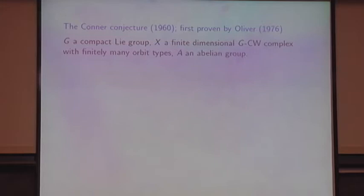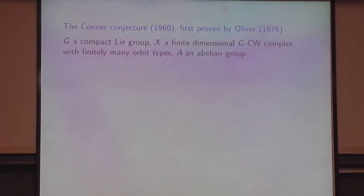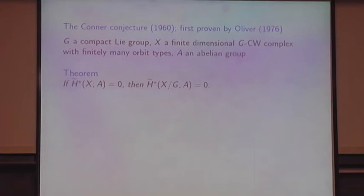Now I want to talk about the Conner conjecture, which is an analogous result where you have a compact Lie group rather than a finite group. Finite dimensional GCW complex again, and now you assume that it has finitely many orbit types. Let A be an abelian group. Theorem: If the cohomology of X is zero, then the cohomology of the orbit space is zero.